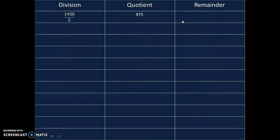1950 divided by 2: answer is 975 with remainder 0. 975 divided by 2: 487 with remainder 1. 487 divided by 2 is 243 with remainder 1. 243 divided by 2 is 121 with remainder 1. 121 divided by 2: answer is 60 with remainder 1. 60 divided by 2: answer is 30 with remainder 0.